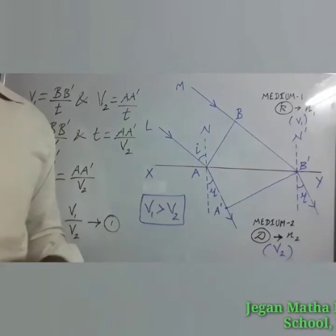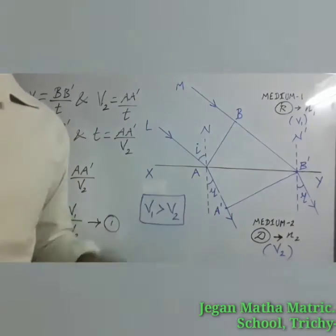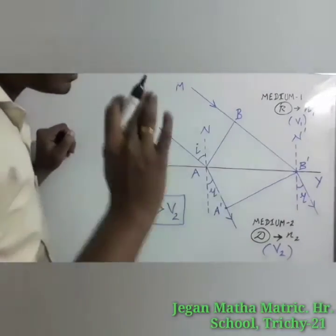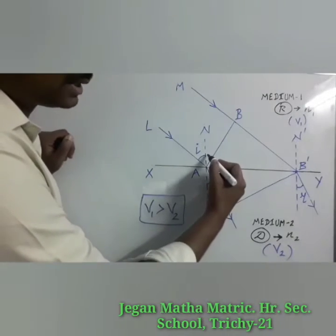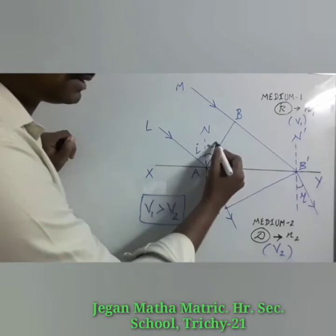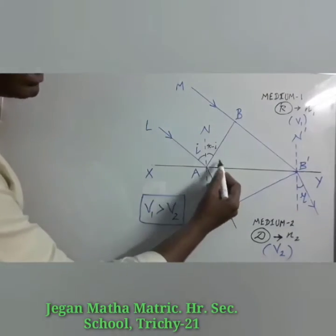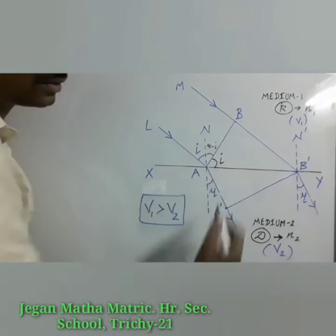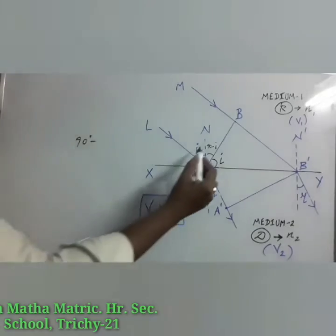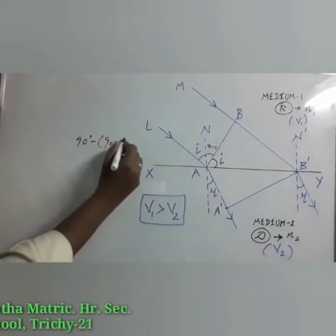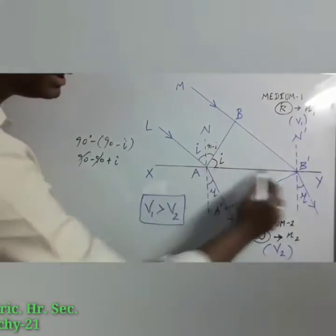The next one is Snell's law: sin i / sin r equals the ratio of the refractive indices of the two media. For that we need the angles of incidence and refraction. The incident wavefront is perpendicular to ray LA, so that angle is 90 degrees, making the remaining angle 90 minus i. The angle between the incident wavefront and the refracting surface is i, since 90 minus (90 minus i) = i.